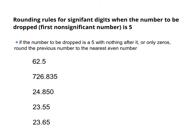If the number to be dropped is a 5 with nothing after it — so no other numbers — or there are zeros after it, we have a new rule: make the previous number an even number. This is basically to round out all of the rounding ups that are occurring when we work with 5s.